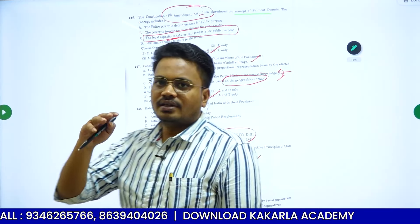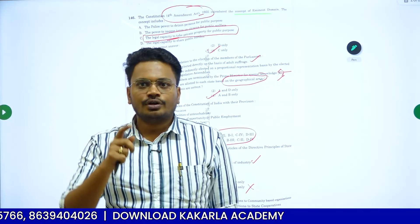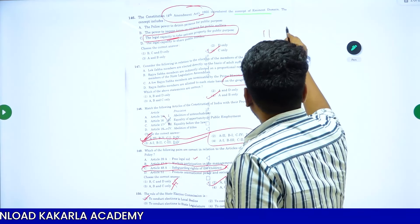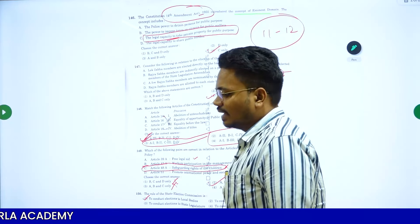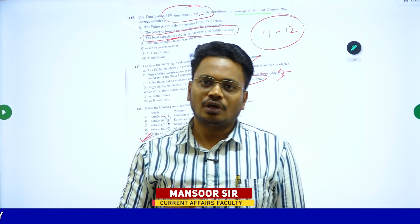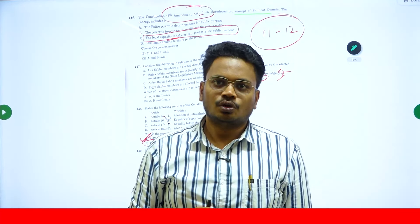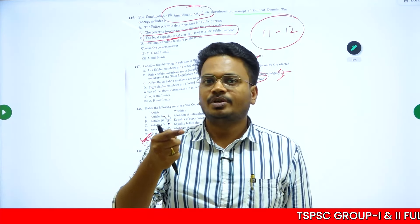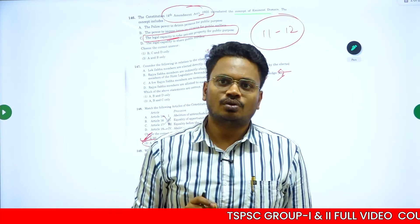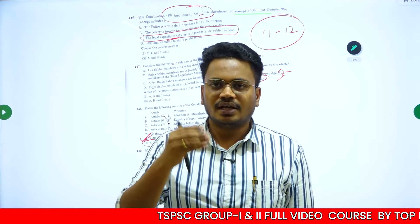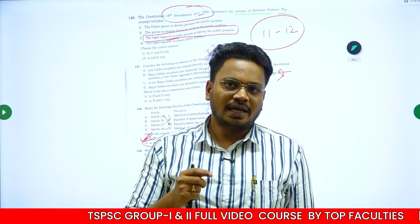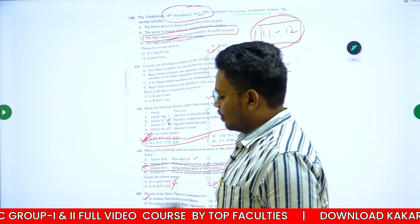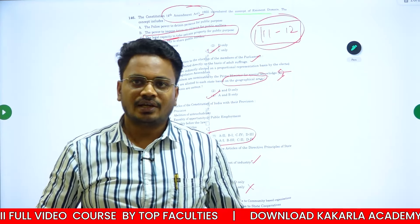So in the polity section, there are 14 questions in total. You can analyze 11 to 12 questions directly — these are easy, direct questions. Only one or two may require a little depth of knowledge. I hope you all found this review helpful. If you scored more than 11 to 12 marks in polity, congratulations! Thank you so much for watching this video.